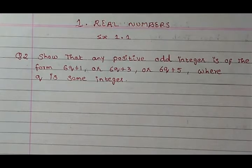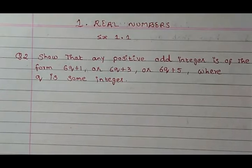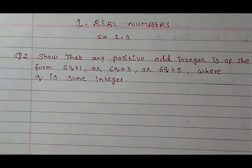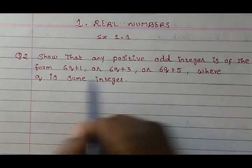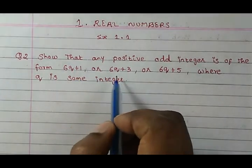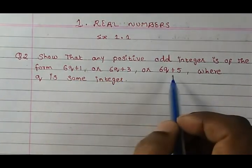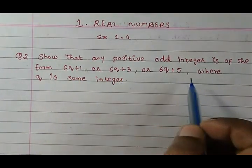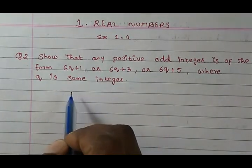Today we will study from exercise 1.1 question 2. Show that any positive odd integer is of the form 6q+1 or 6q+3 or 6q+5 where q is some integer.